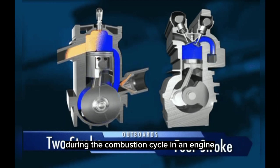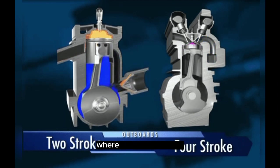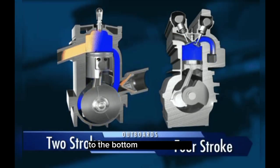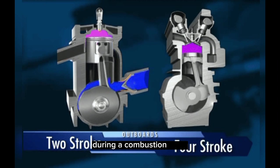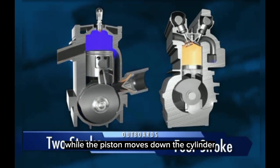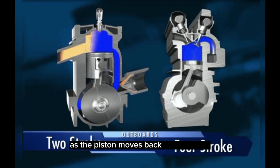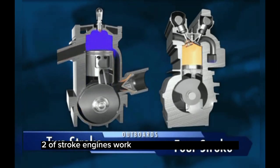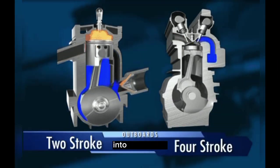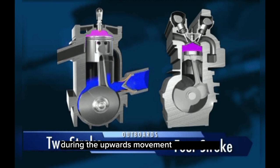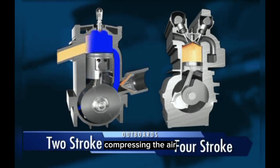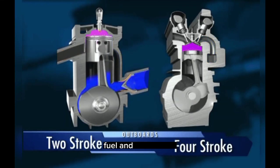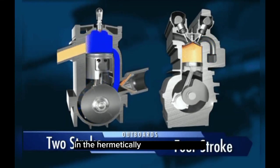During the combustion cycle in an engine, the piston moves up and down within a cylinder. A stroke is when the piston moves from the top center to the bottom of the cylinder. During a combustion cycle, as the piston moves down the cylinder, it captures air and gas. As the piston moves back up to the top, the exhaust valve opens to expel the exhaust. Two-stroke engines work by combining more functions into one piston movement. During the upward movement of the piston, the air, fuel, and oil mixture is compressed in the combustion chamber, while underneath the piston a fresh mixture of air, fuel, and oil is drawn into the hermetically closed crankcase.